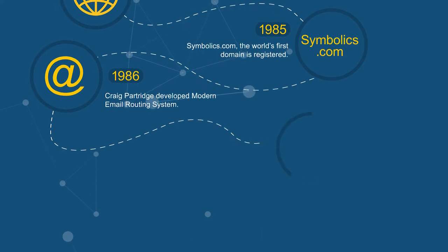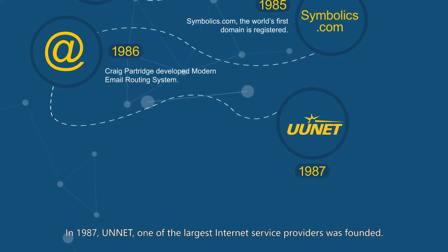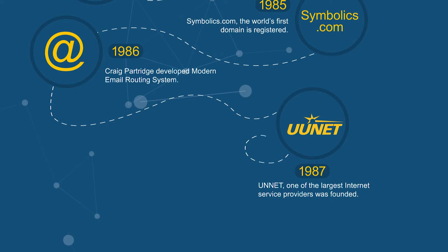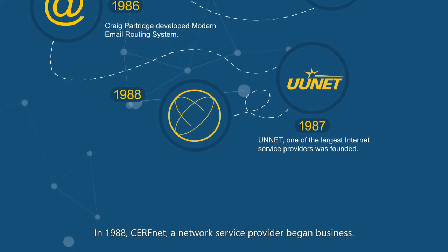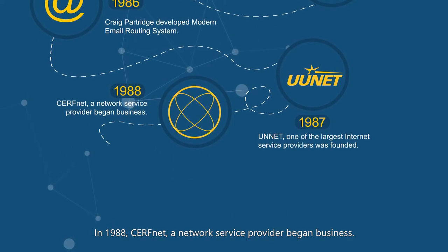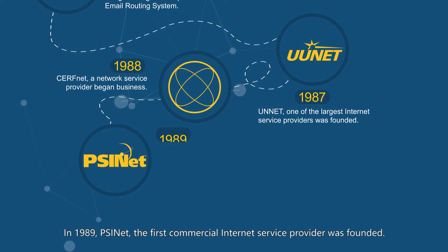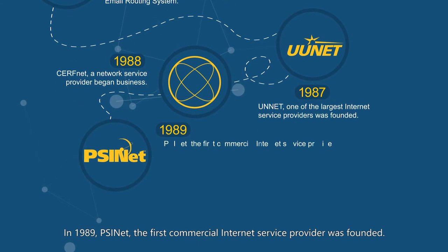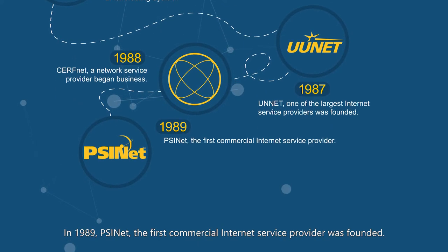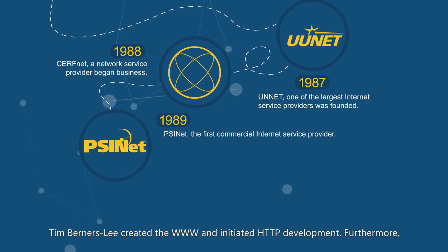In 1986, Craig Partridge developed a modern email routing system. In 1987, ANS, one of the largest internet service providers, was founded. In 1988, CERFnet, a network service provider, began business.